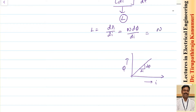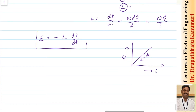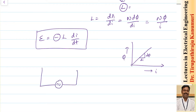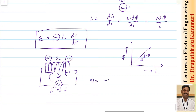The EMF induced can be written as minus L into di/dt. The negative sign indicates that whatever EMF is produced will try to oppose the cause. For example, applying a voltage V to a coil, at any instant the EMF induced opposes the cause. Applying KVL in this loop: V minus e equals zero, so V equals minus e, meaning the applied voltage equals L into di/dt.